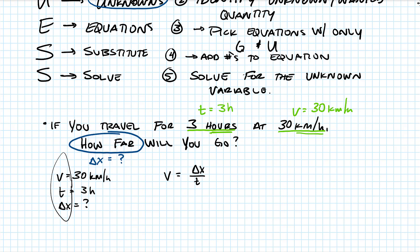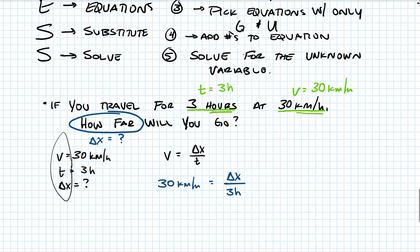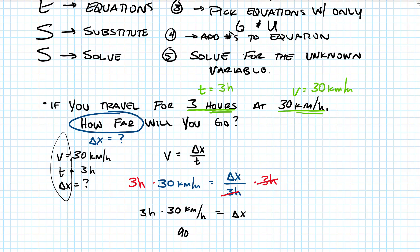We substitute in our numbers: 30 km/h = Δx / 3 hours. To solve for Δx, we multiply both sides by 3 hours. That gives us 3 hours × 30 km/h = Δx. Three times thirty is ninety, and the hours cancel, so Δx = 90 kilometers.